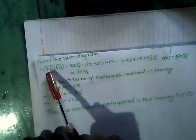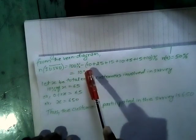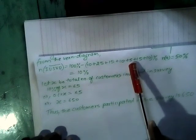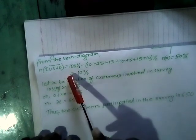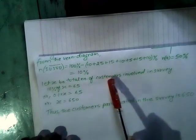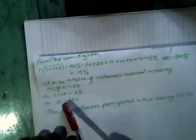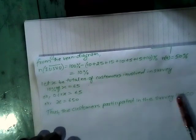Complete O is equal to 10%. Let X be the total number of customers involved in the survey. So 10% of X is equal to 65, therefore X is equal to 650. So 650 customers participated in the survey. This is the complete solution of question number 112.